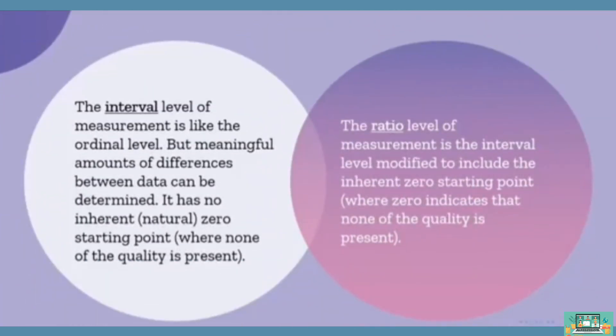The interval level of measurement is like the ordinal level, but meaningful amounts of differences between data can be determined. It has no inherent natural zero starting point where none of the quality is present. The ratio level of measurement is the interval level modified to include the inherent zero starting point where zero indicates that none of the quality is present.